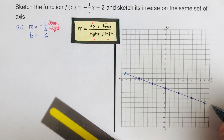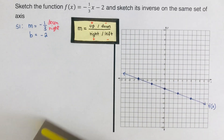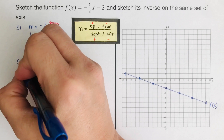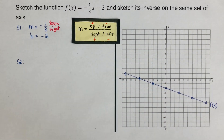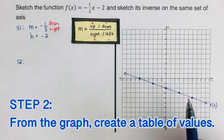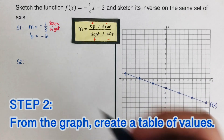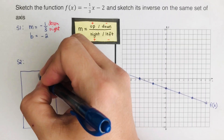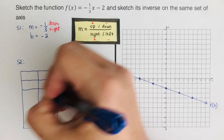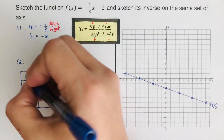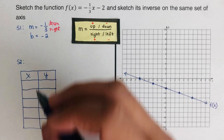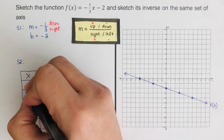This is the graph of the function, which we label as f(x). Moving to step two: from the graph, create a table using the plotted dots. Starting with the point (−6, 0), then writing negative six, zero into the table.